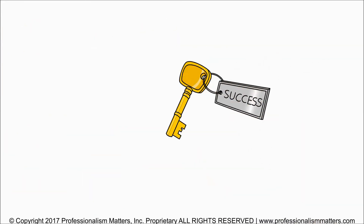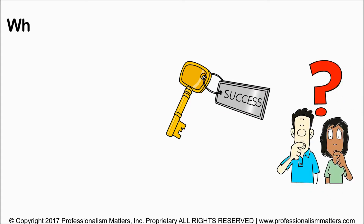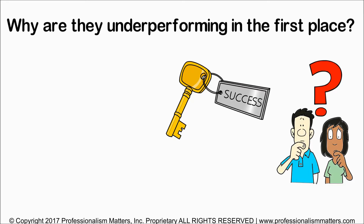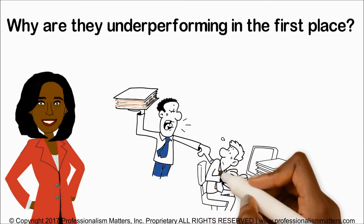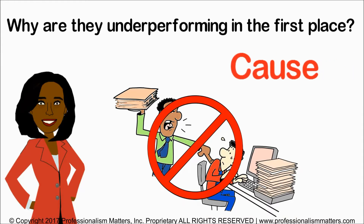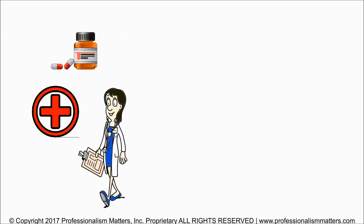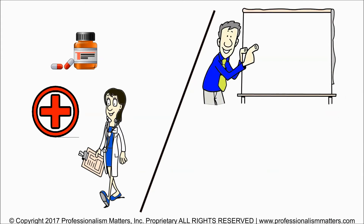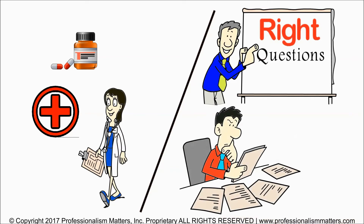While those questions are key, I submit that the most important question should be: why are they underperforming in the first place? As a corporate trainer, one of the biggest mistakes that I see leaders make is attempting to correct an underperformer without first diagnosing the cause of the poor performance. Just like a doctor wouldn't start evaluating a patient by prescribing medication, a leader must first ask the right questions to determine the underlying root cause before selecting a course of action.